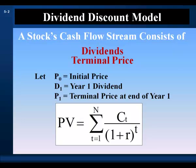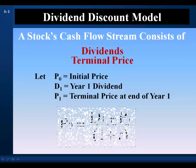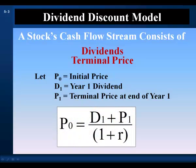Let's let P0 equal the initial price, D1 the year 1 dividend, and P1 the terminal price at the end of year 1. Given the stock's cash flows, we input them into the discounted cash flow model. The current price of a common stock is the dividend received in year 1, plus the terminal price at the end of year 1, discounted back to the present at the stock's opportunity cost of capital.